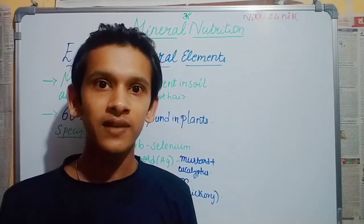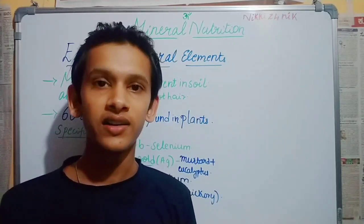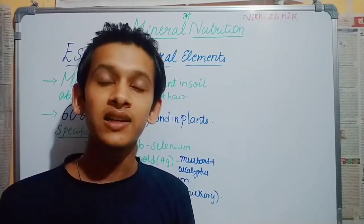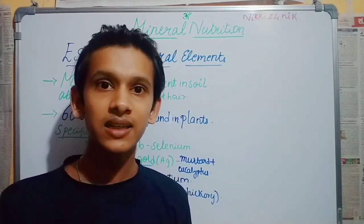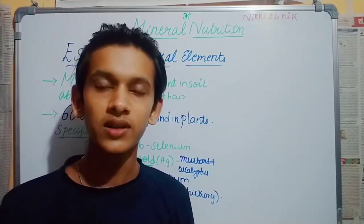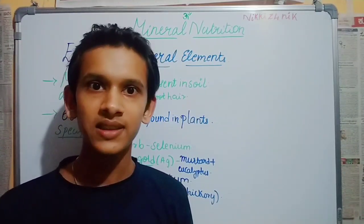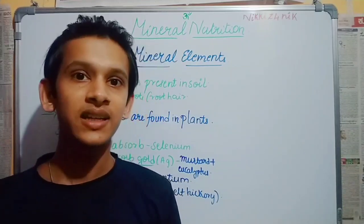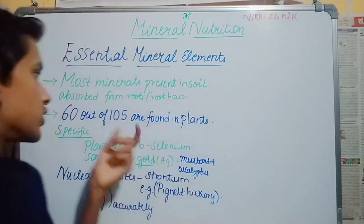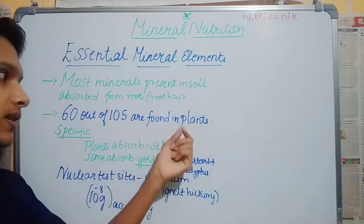Out of 105 elements in the earth, there are 105 elements in minerals in general. Of these, 60 elements can be absorbed by plants — so 60 out of 105 elements are found in plants.